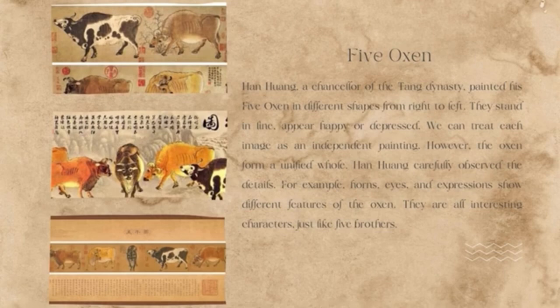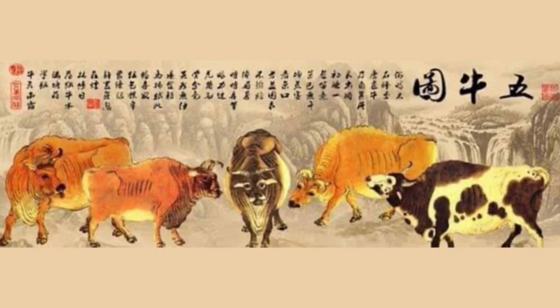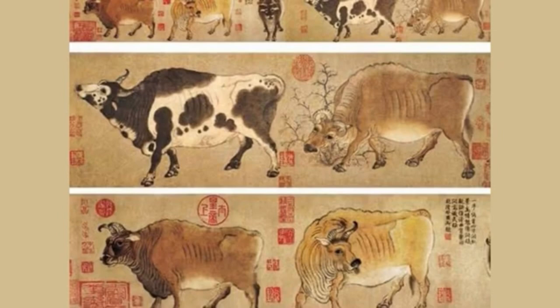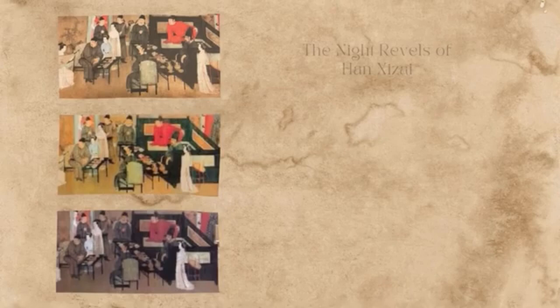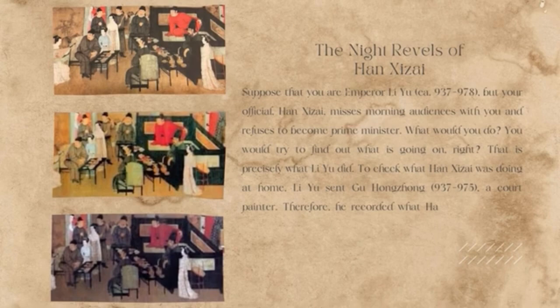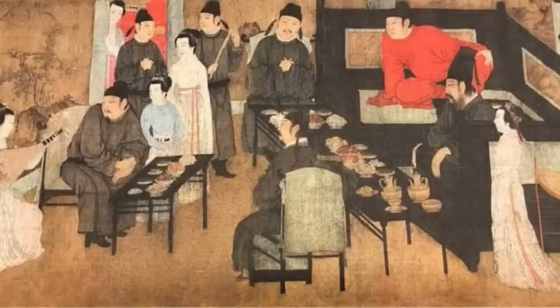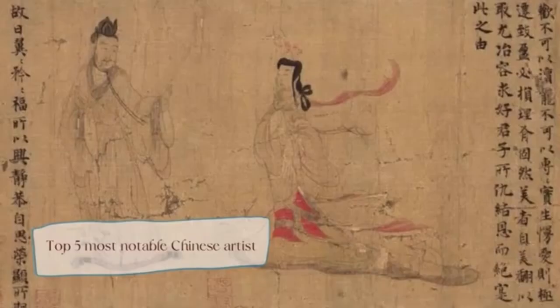From right to left, the five oxen stand in line, appearing happy or depressed. Each image can be treated as an independent painting, yet they form a unified whole. Han Huang carefully observed details such as horns, eyes, and expressions, showing different features of each ox. The fifth artwork is 'Night Revels of Han Xizai.' Emperor Li Yu's official Han Xizai missed court audiences and refused to become prime minister. To find out what was happening, Li Yu sent court painter Gu Hongzhong to record Han Xizai's activities by painting the night revels.